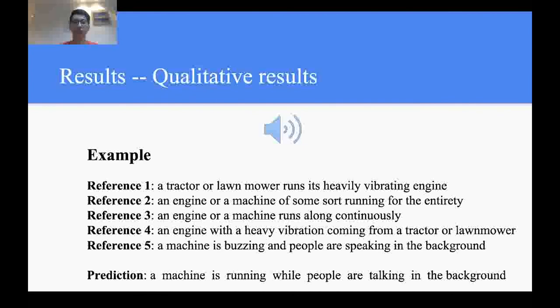human references are very diversified in the description, such as buzzing, or vibration, while machine prediction only uses a general expression, running. Some annotators use tractor or lawnmower, but the prediction uses the most general phrase, a machine.